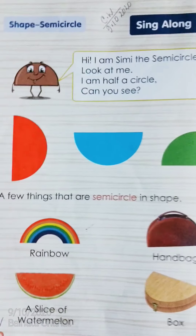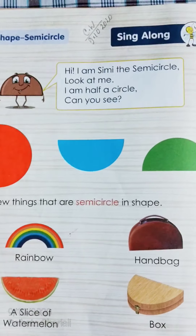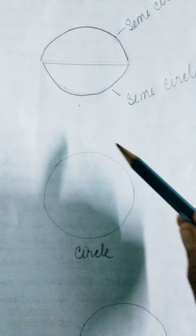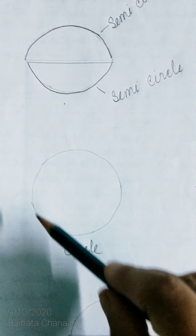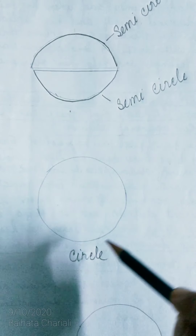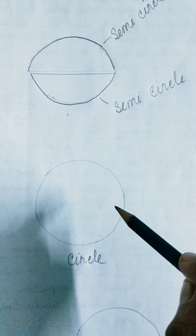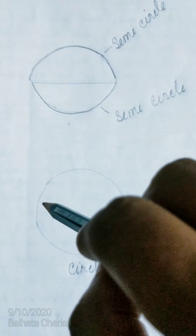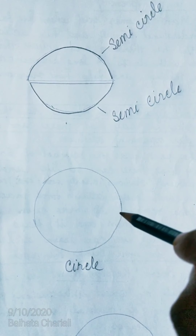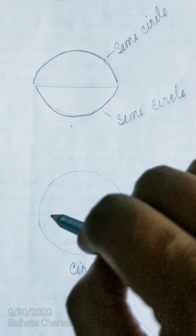We are going to learn the shape semi-circle by drawing a full circle here. This is the full circle. When we make a line in between, in the middle of the circle,